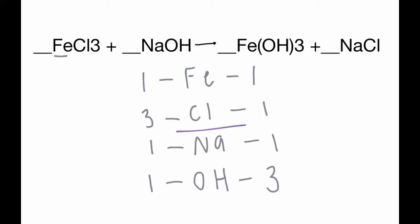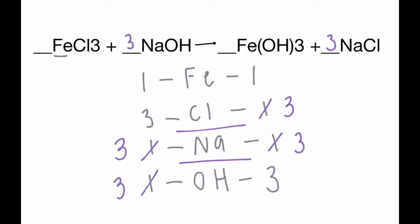First we're going to balance Cl. On the left side we have three and on the right side we have one, so we put a 3 in front of NaCl. That 3 also affects the Na, so we add a 3 there as well. That means on the left side we also need a 3 in front of NaOH. That 3 also applies to the OH, so that turns into 3, and now we have a completed balanced equation.